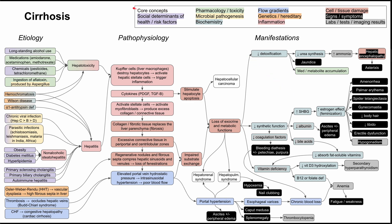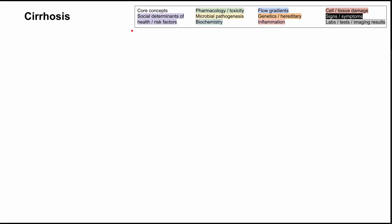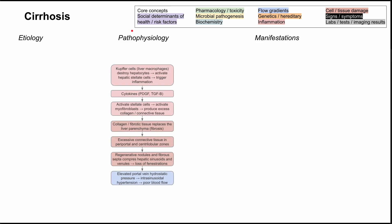As in all of these mechanism of disease maps, we have the core concepts that are color-coded according to the legend. Take a screenshot if you want, or I'll clear everything and go through it one by one. We're going to start with the pathophysiology first.